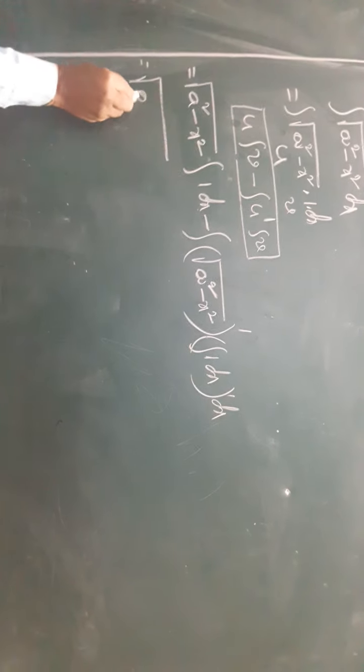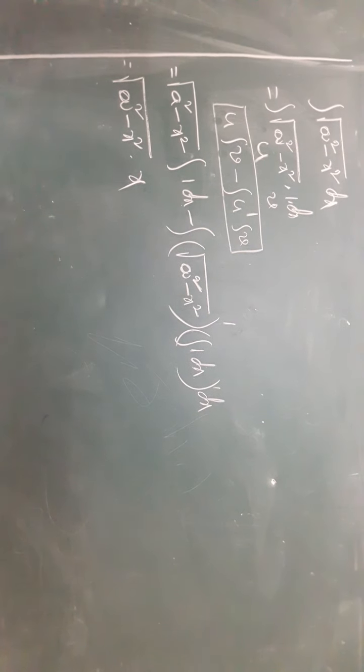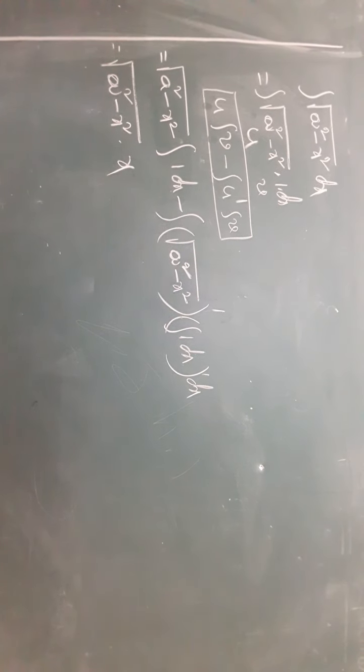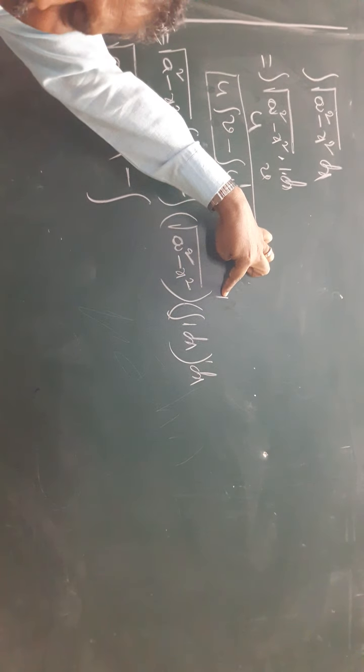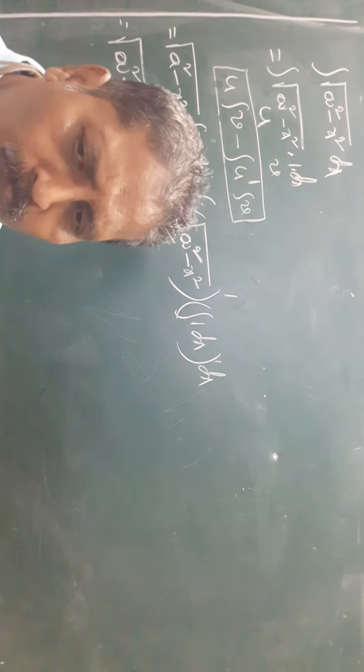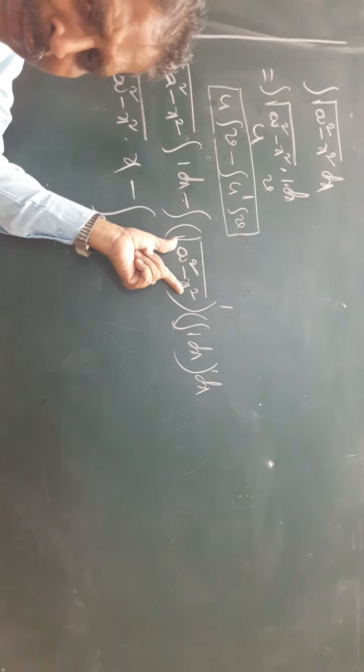So we have √(a² - x²) · x minus ∫u' · ∫v dx. Now, all of you listen — first take the derivative of the root function, and after that multiply by the derivative of the internal function.